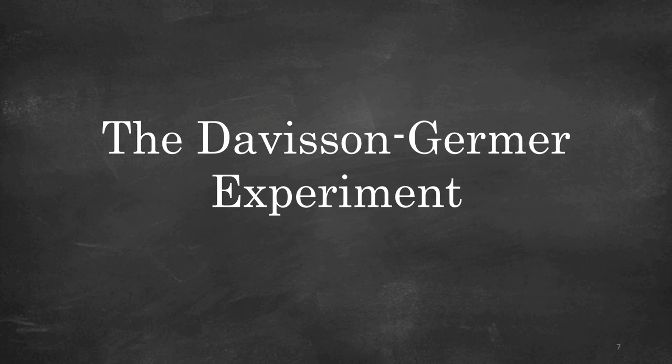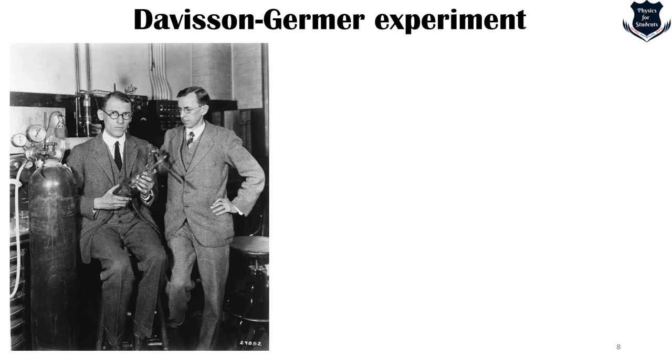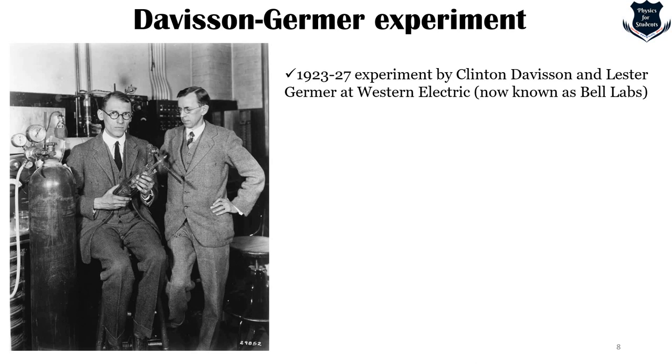The Davison-Germer experiment established the wave nature of electrons and validated the de Broglie equation for the first time. It was carried out in Western Electric, now known as Bell Labs. De Broglie proposed the dual nature of matter in 1924, but it was not until Davison and Germer's experiment that it was confirmed.